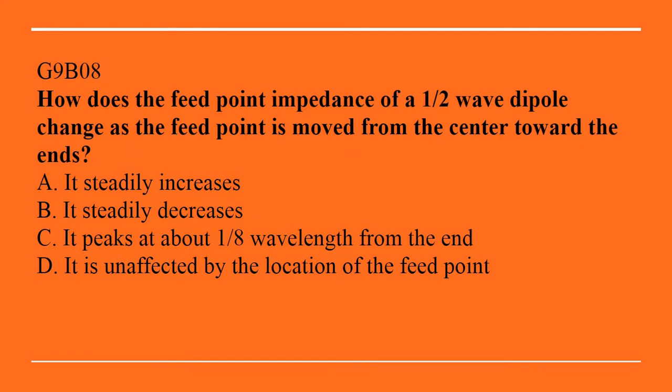G9B08: How does the feed point impedance of a half-wave dipole change as the feed point is moved from the center towards the ends? A. It steadily increases. B. It steadily decreases. C. It peaks at about one-eighth wavelength from the end. Or D. It is unaffected by the location of the feed point. The answer is A, it steadily increases.